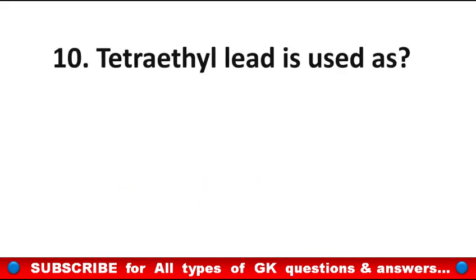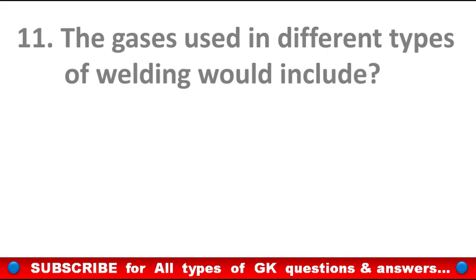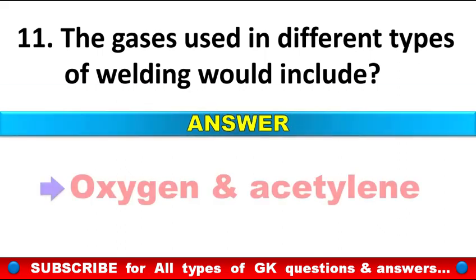Tetraethyl lead is used as? Answer: Petrol additive. The gases used in different types of welding would include? Answer: Oxygen and acetylene.